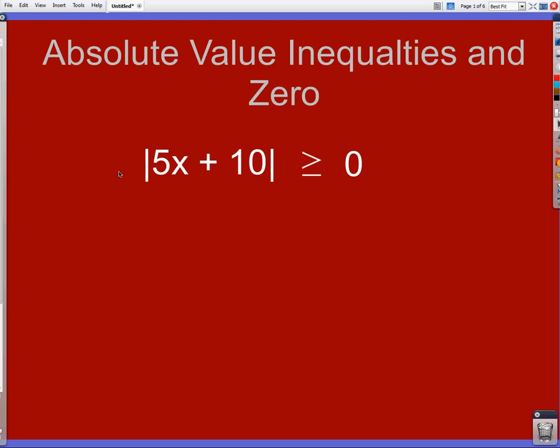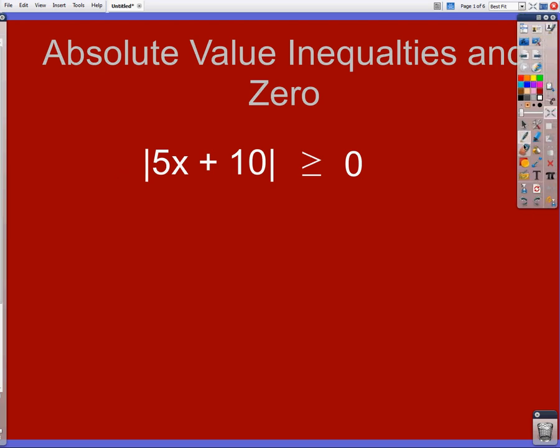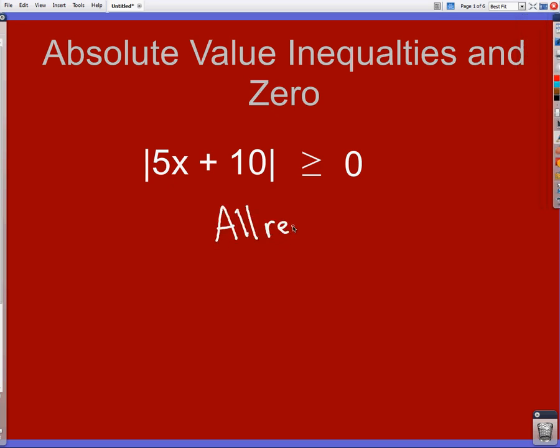So in the first situation I have an absolute value of 5x plus 10 greater than or equal to zero. Well that meets all the criteria for an absolute value, so no matter what I plug in, it's going to give me an answer that is either greater than or equal to zero because it's an absolute value. So in this situation, my answer is just all real numbers.